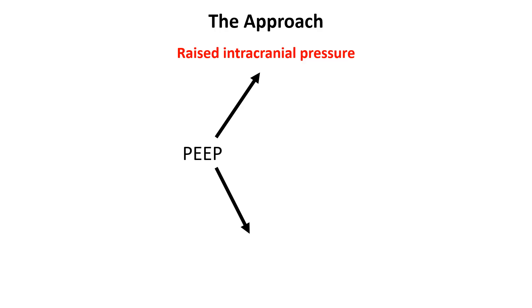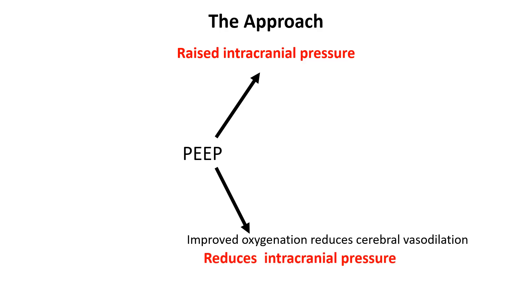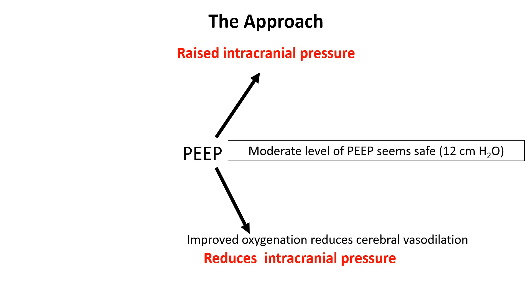PEEP can increase intrathoracic pressure, which may impede cerebral venous outflow, potentially leading to elevated ICP. Conversely, in certain conditions, PEEP has been observed to decrease ICP, particularly in hypovolemic states, as PEEP enhances oxygenation, reducing hypoxic cerebral vasodilation, which can lower cerebral blood volume and subsequently decrease ICP. A study indicated that PEEP levels up to 12 cm H2O result in negligible increases in ICP, suggesting that moderate PEEP may be safely applied in patients with acute brain injury. However, continuous monitoring of ICP and cerebral perfusion pressure is necessary when adjusting PEEP levels to detect and address any adverse changes promptly.